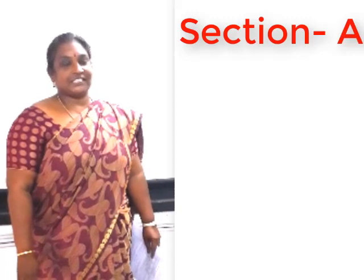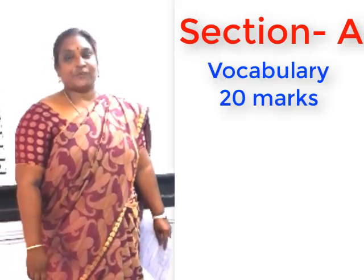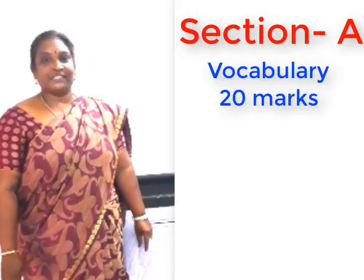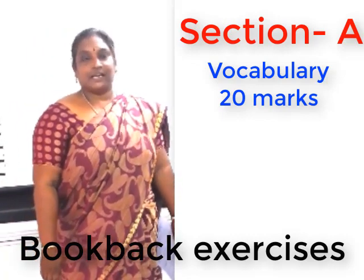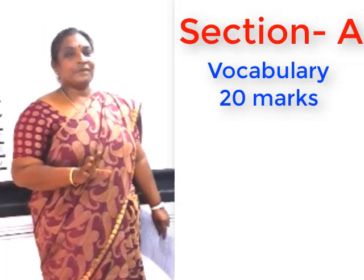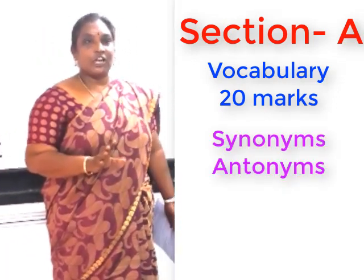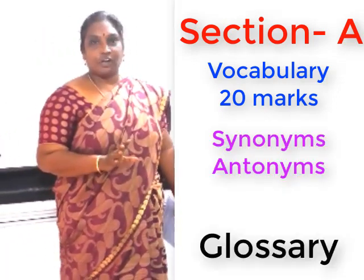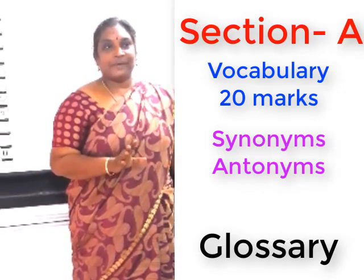As you all very well know, the first section consists of vocabulary and it consists of 20 marks. Out of 20, you can very well score 10 marks by learning the bookmark exercise. Regarding synonyms and antonyms, you can learn the synonyms from the glossary. Out of 5, you can easily write 3 synonyms.